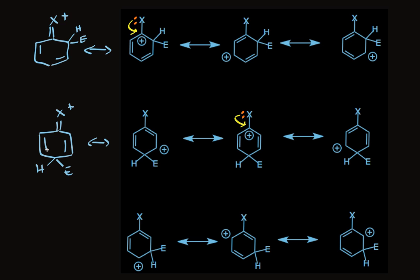Now looking at the meta substitution, you see that the positive charge is never on the carbon that has the halogen attached to it. So this fourth resonance form isn't possible. The intermediate in meta substitution doesn't enjoy any special stability and is formed slower.